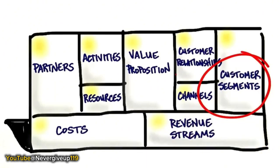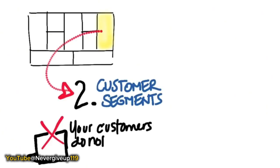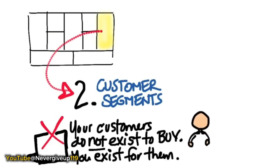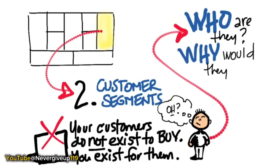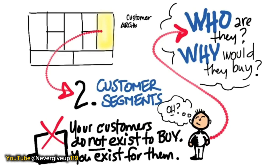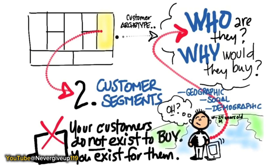The next thing is: who are my customers, and why would they buy? Your customers do not exist to buy — you exist for them. By getting out of the building, you'll figure out their geographic, social characteristics, and demographics, such that you could actually draw a picture of who the archetype or persona of your customer is. Most startups have more than one or two or three types of customer archetypes. But you need to understand them in detail, and there is no possible way you could have anything but a hypothesis on day one of who they are.